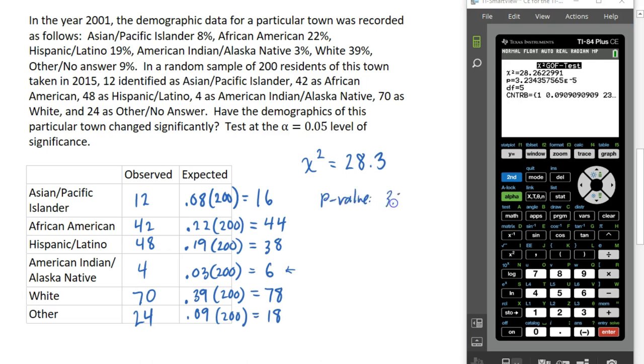And a p-value of 3.23 times 10 to the minus fifth power, which is this number. So that's a very small p-value. It's definitely less than alpha. Alpha was 0.05. Our p-value is less than that, which means we reject the null. Which reminds me, I forgot to write down the hypotheses here.